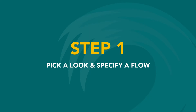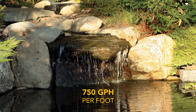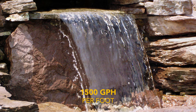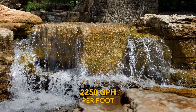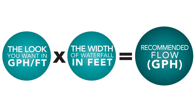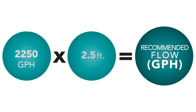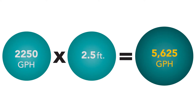Let's begin by picking a look and specifying a flow. Choose between a trickle of water at around 750 gallons per hour per foot of waterfall width, a sheet at around 1,500 gallons per hour per foot, or Niagara at around 2,250 gallons per hour per foot. Let's say we want Niagara — that's 2,250 gallons per hour, multiplied by the width of 2.5 feet, giving us a flow of 5,625 gallons per hour.